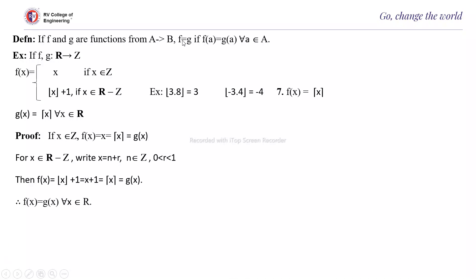Definition: if f and g are functions from A to B, then f = g if and only if f(a) = g(a) for all a ∈ A. That means for every element of A, if both functions have the same images, then the two functions are said to be equal. Example: if f and g are functions from R to Z such that f(x) = x if x ∈ Z, or floor(x) + 1 if x ∈ R \ Z (a real number but not an integer). And g(x) = ceil(x) for all x ∈ R. We need to show f(x) = g(x). If x is an integer, f(x) = x and g(x) = ceil(x) = x, so the first condition is satisfied.